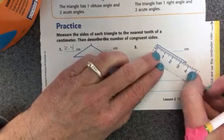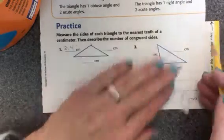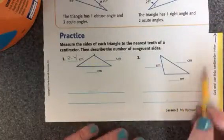Then you'll go to this one and do the very same thing. Measure the sides of the triangle, write them down, and then write how many congruent sides there are. Let's look at the back.